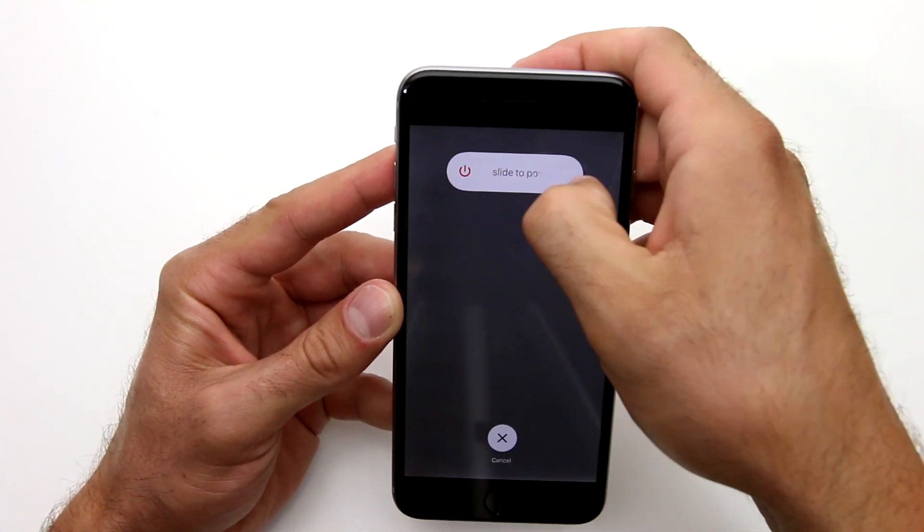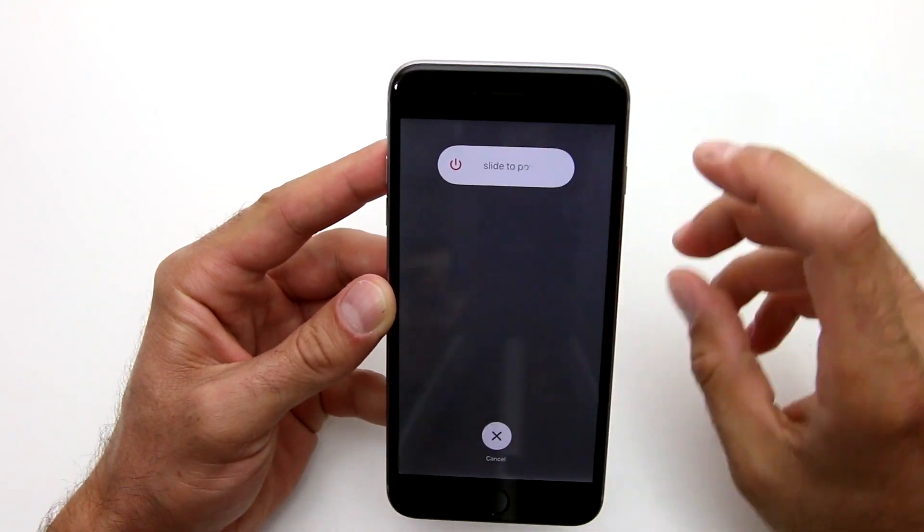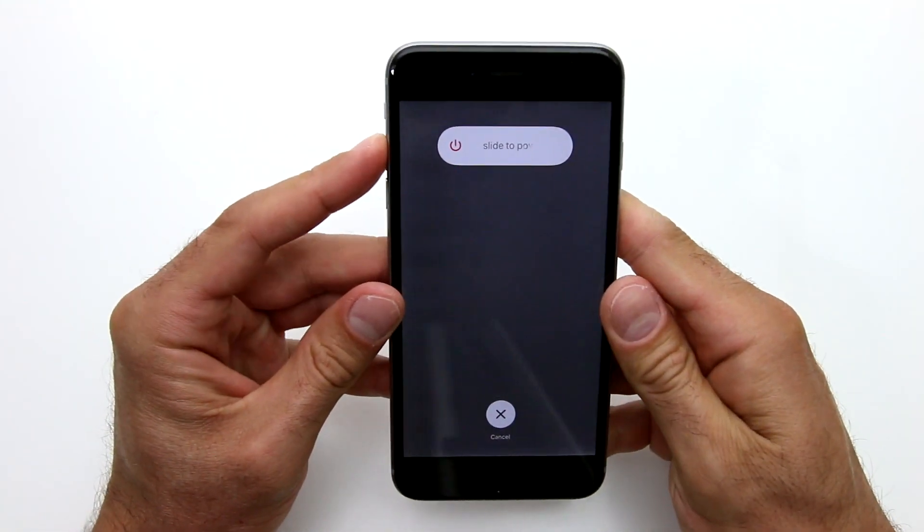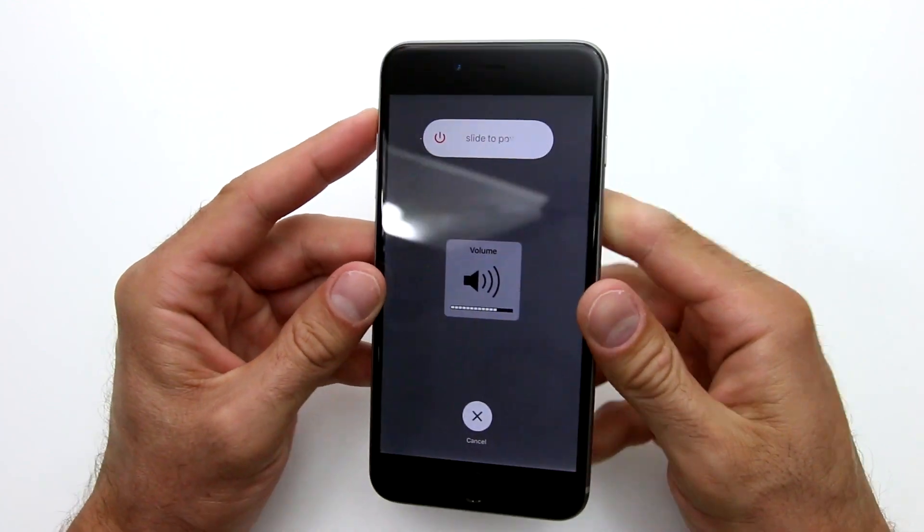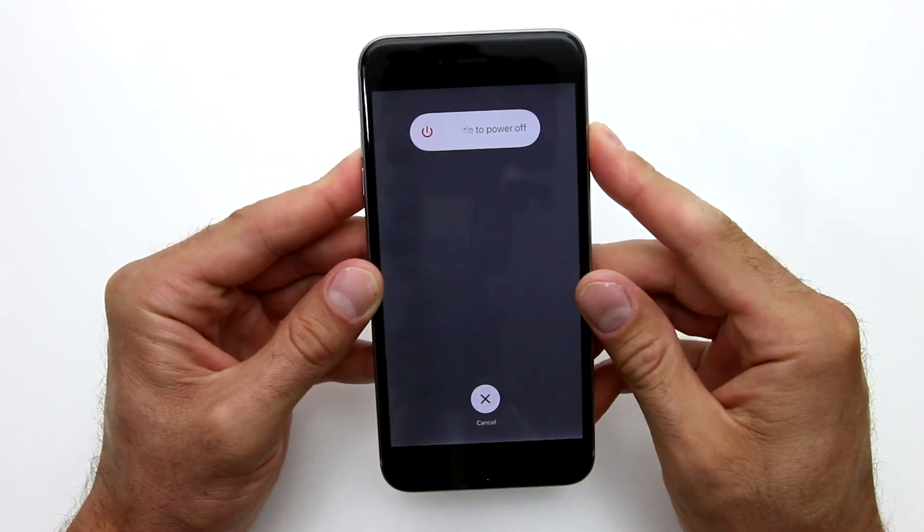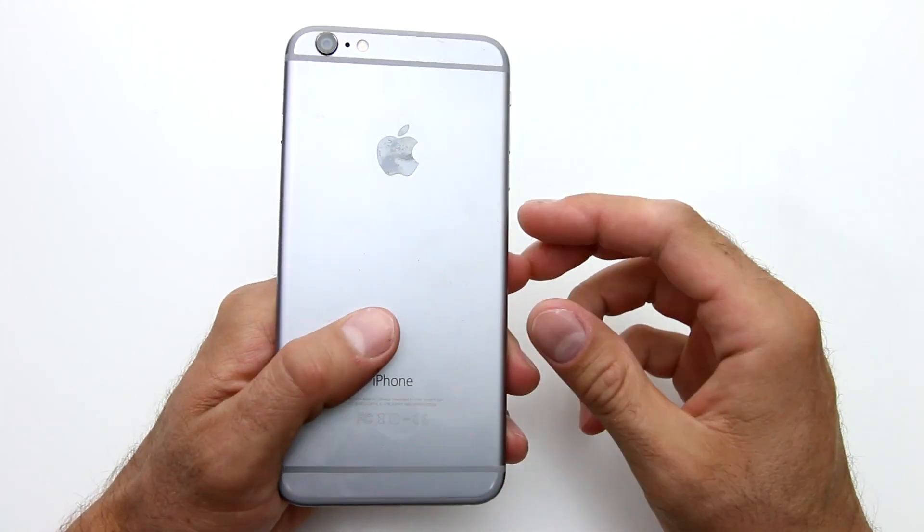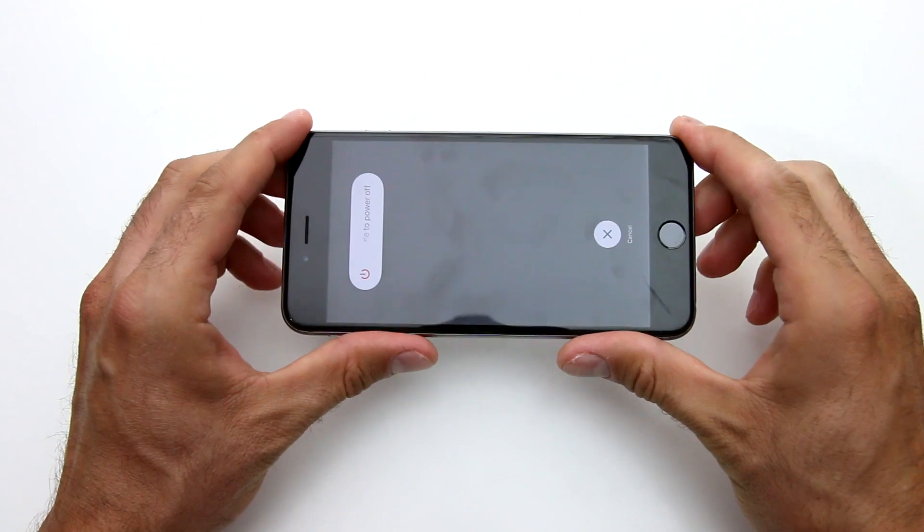So as you can see you can use the buttons, you can try to turn it off, but the screen is not responding at all. You can't cancel out of this and you can't slide the slider to the right to power it down although you can turn up and down the volume. So in order to fix this follow along and I will guide you through the entire process.